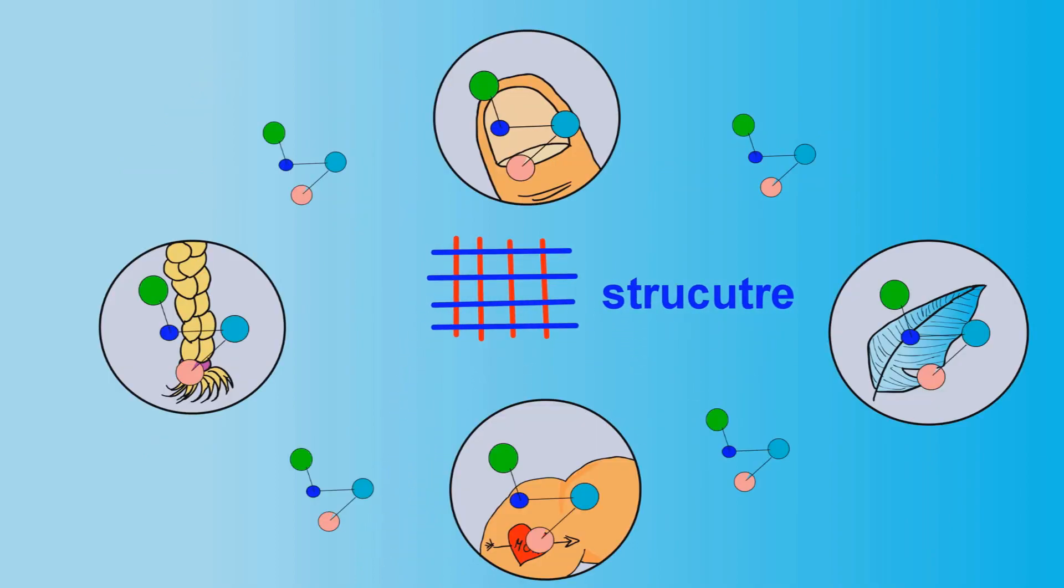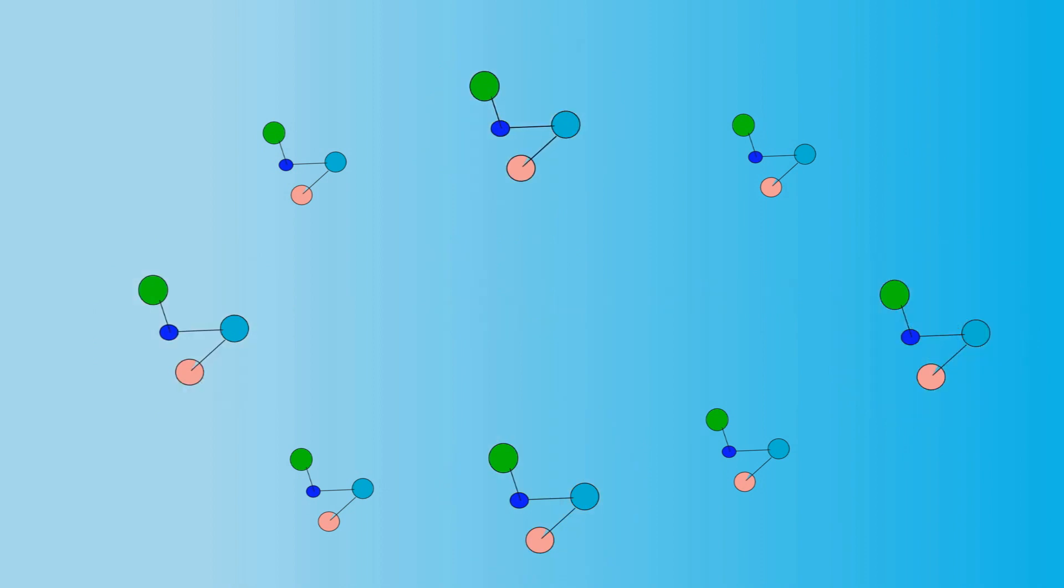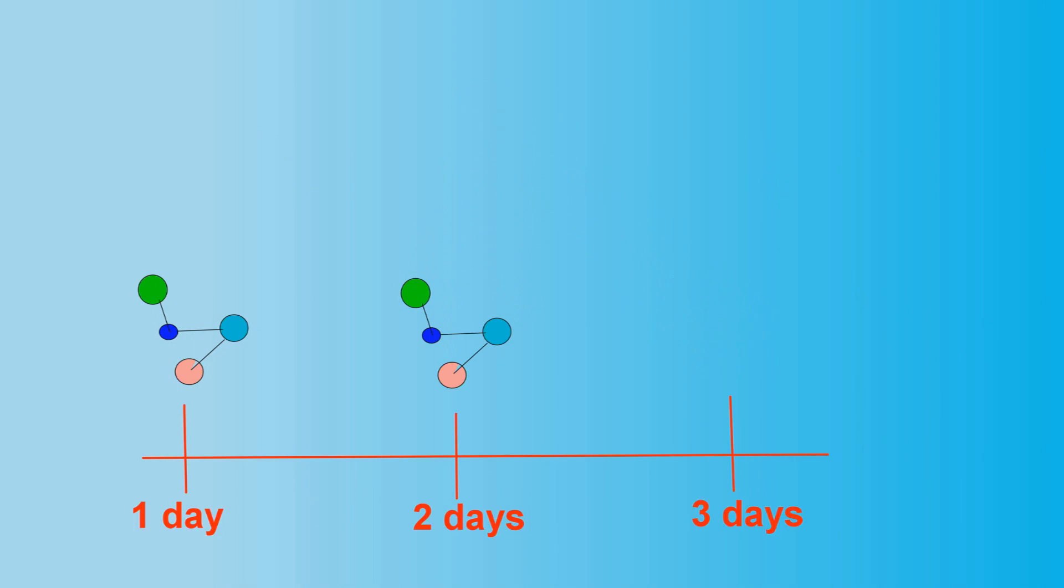There are so many proteins working constantly, but surprisingly, some of them don't even last very long. They degrade over time, and they usually only last about a day or two. This means we're constantly making these proteins. But how do we do that?